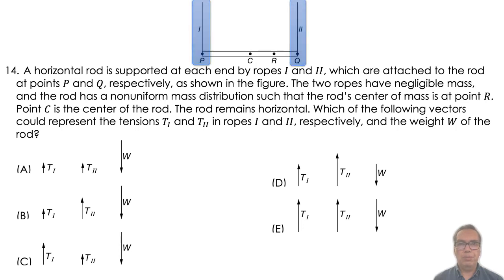The two ropes have negligible mass, and the rod has a non-uniform mass distribution such that the rod's center of mass is at point R. Point C is the center of the rod. The rod remains horizontal.